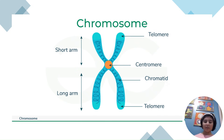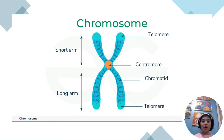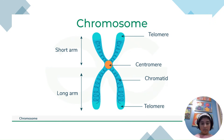Today I will be explaining mitosis and meiosis. Before I start, I will explain the structure of a chromosome. The chromosome has two arms: the short arm and the long arm. It also has two telomeres, and the center is called the centromere, which splits the chromosome into two parts.